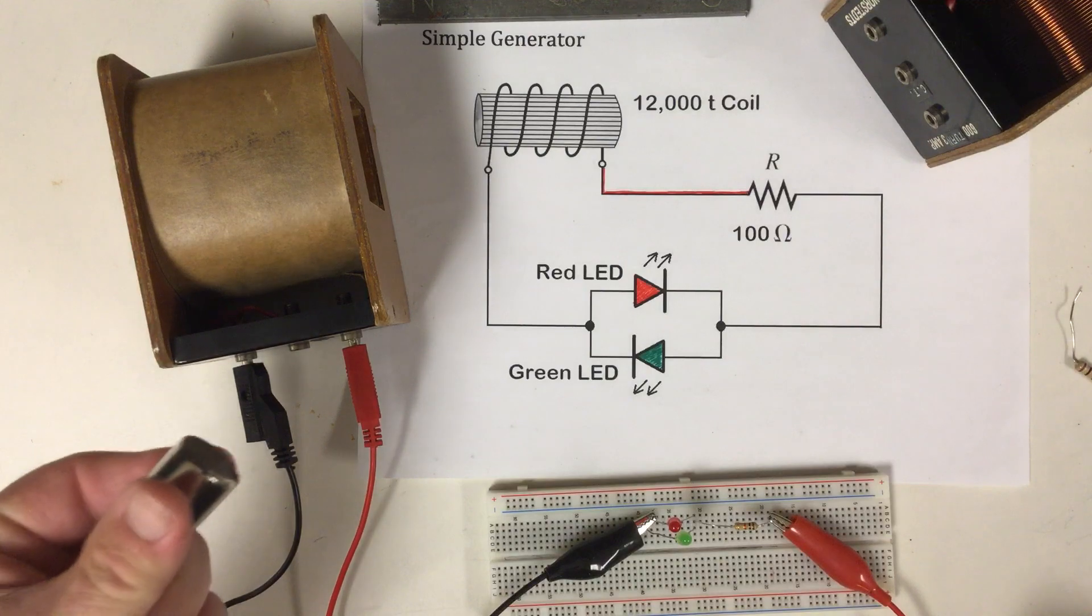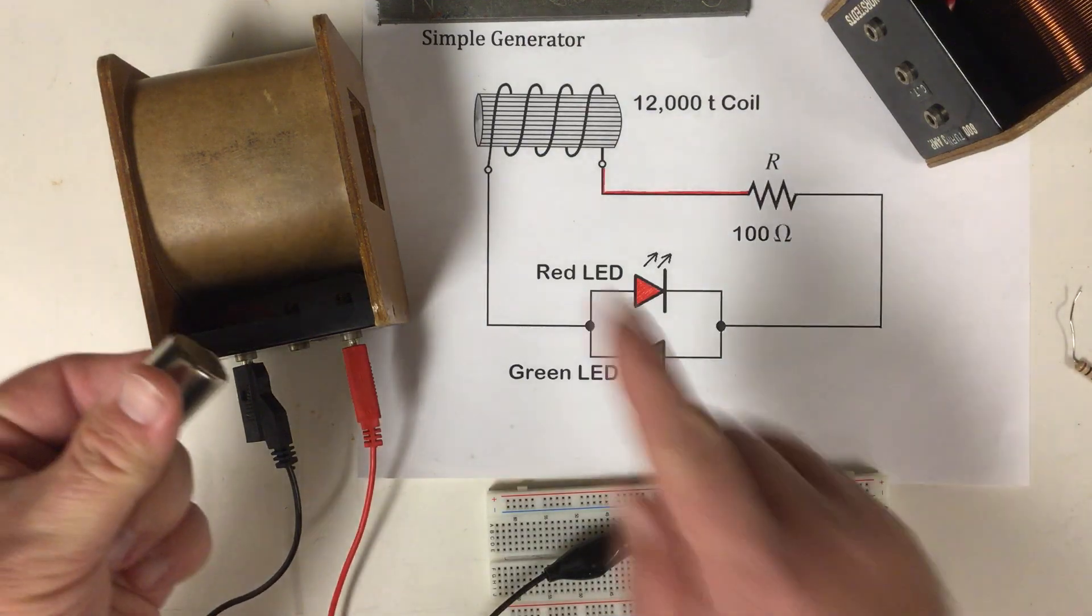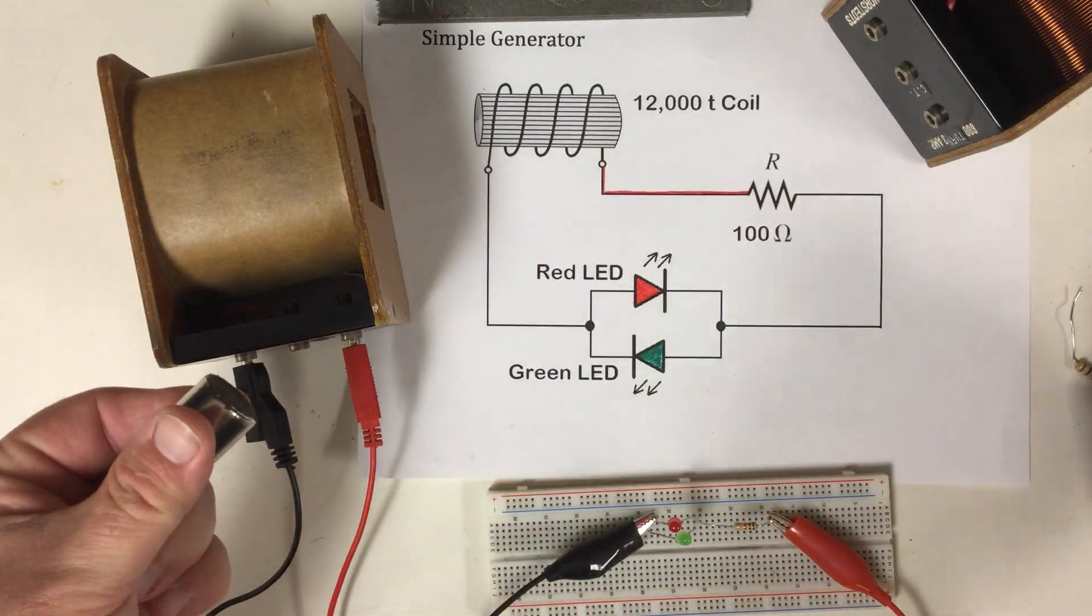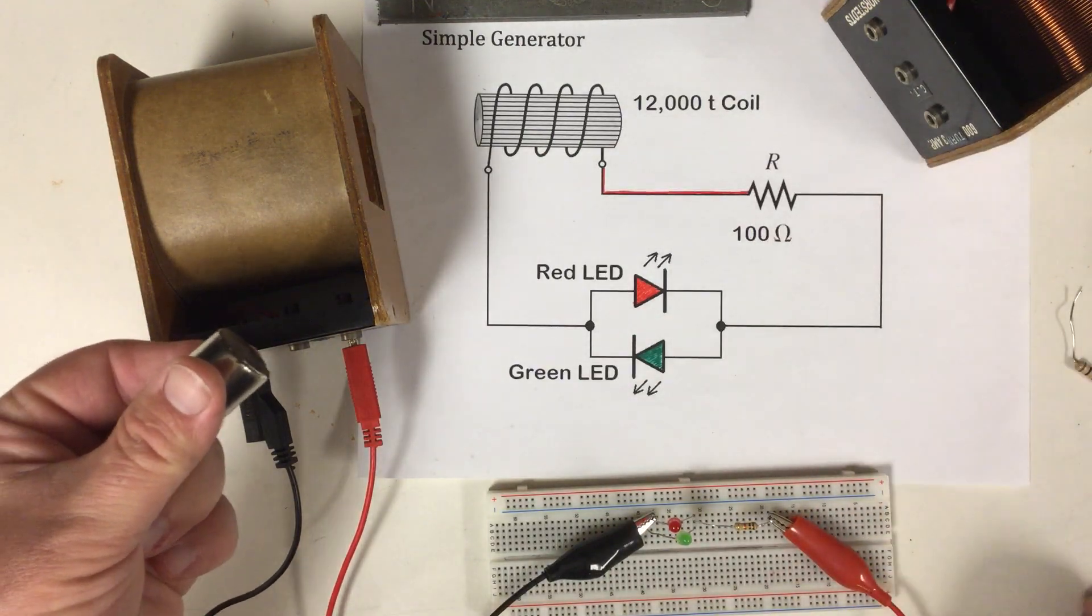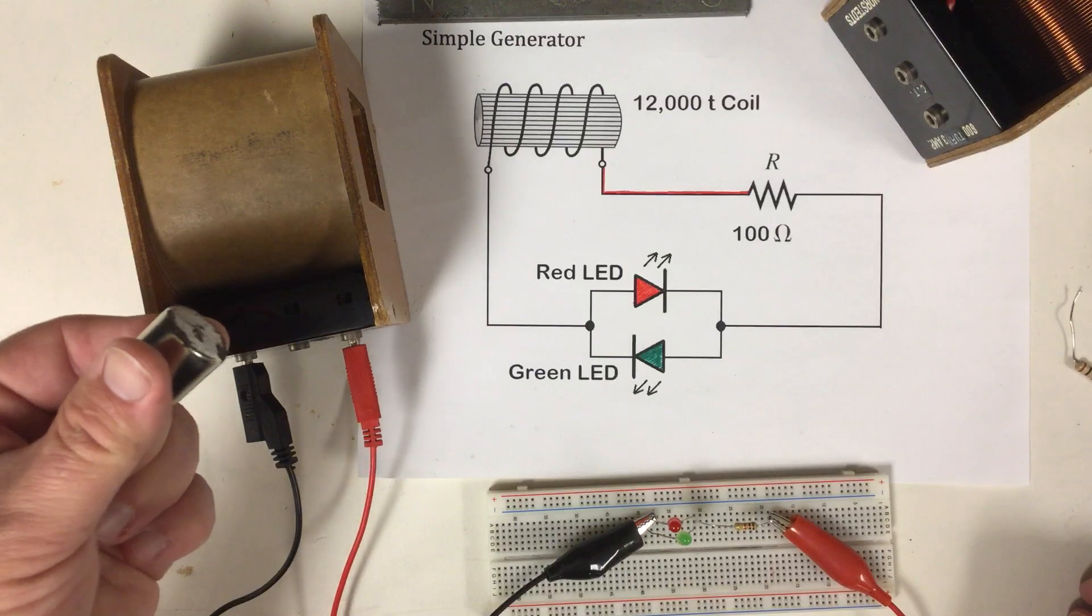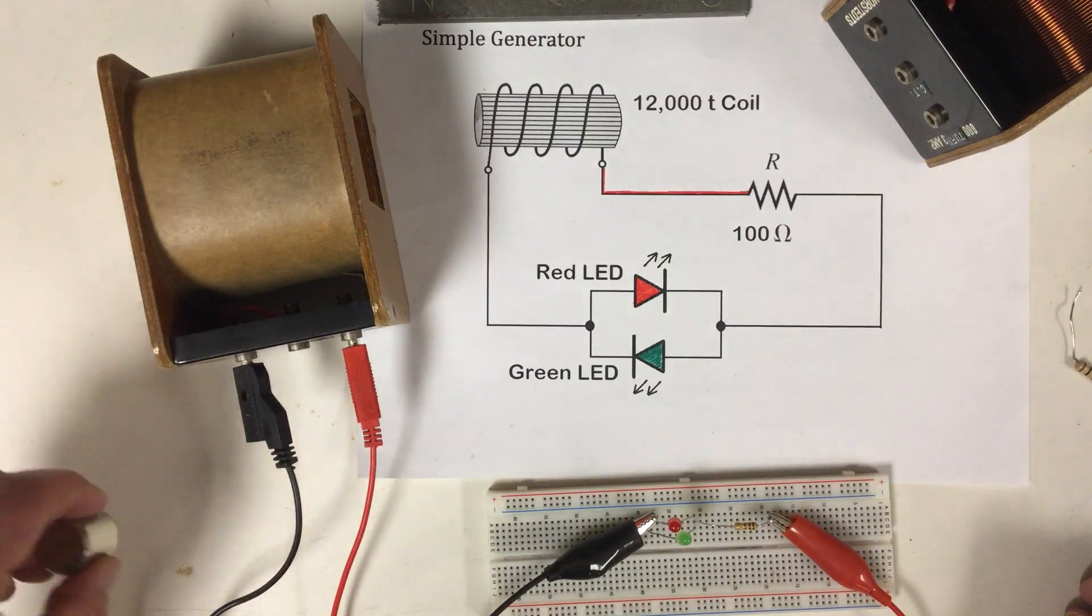The strength of the magnet, the number of turns in my coil, the permeability of my core, all impact how much voltage is generated, as well as the speed of the cutting action.